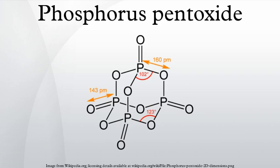Structure. Phosphorus pentoxide crystallizes in at least four forms or polymorphs. The most familiar one, a metastable form shown in the figure, comprises molecules of P4O10. Weak van der Waals forces hold these molecules together in a hexagonal lattice.